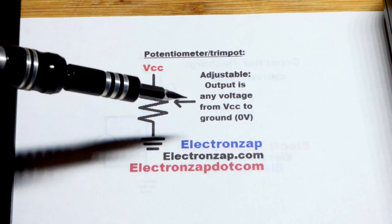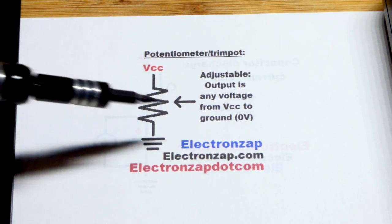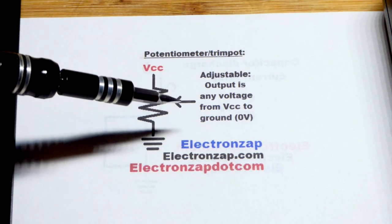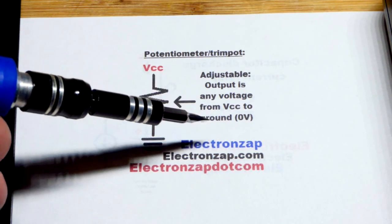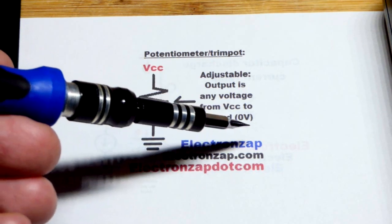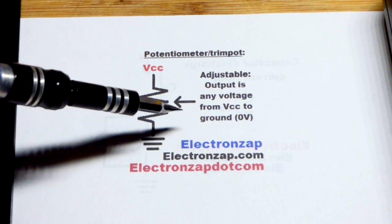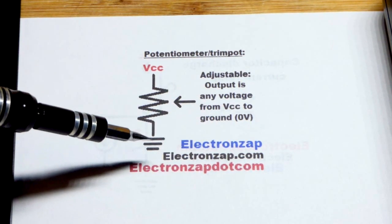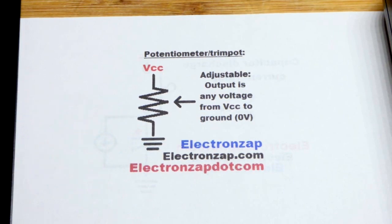There is a wiper, a third terminal, and since there's some resistance towards the positive side and some towards the negative side, depending on the position of the wiper you will either get the full voltage of the power supply or you can go all the way down to what's considered zero volts ground, the negative side of the power supply.